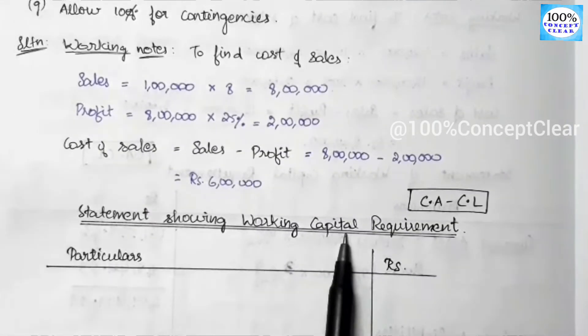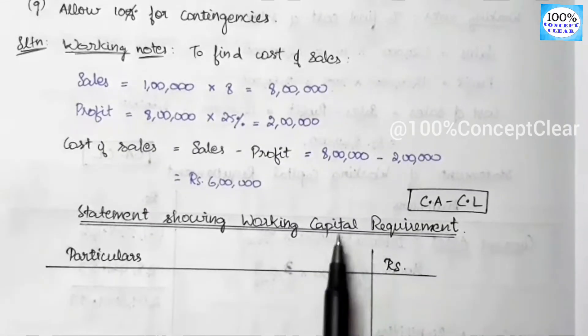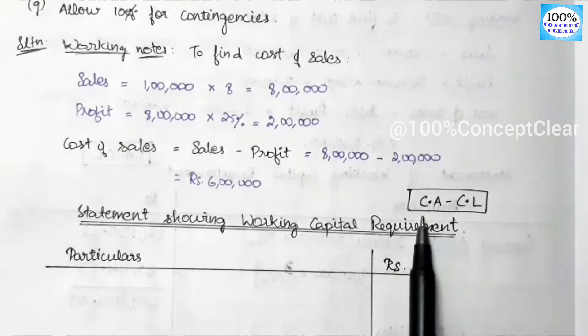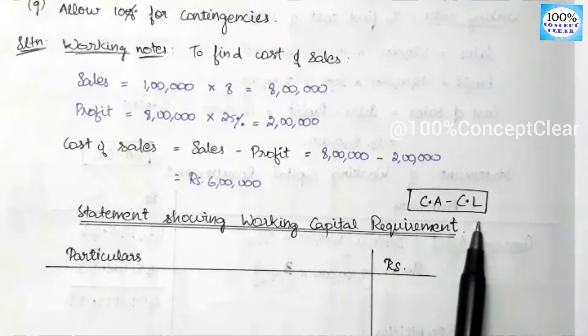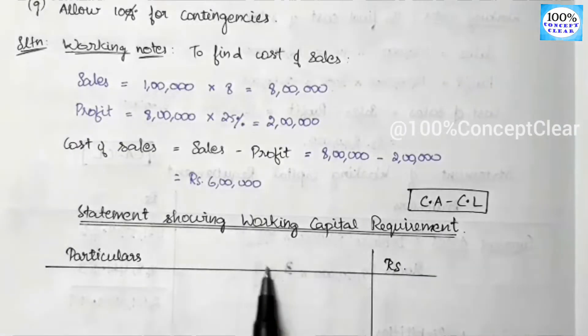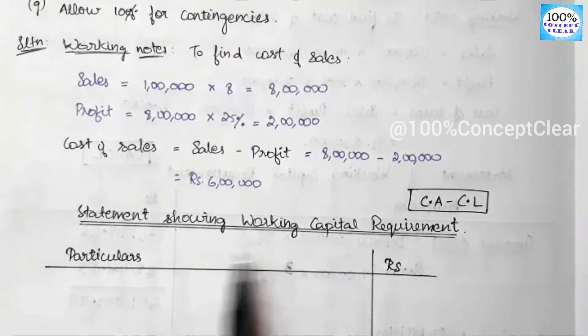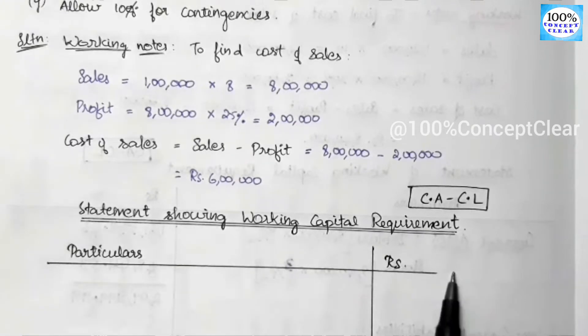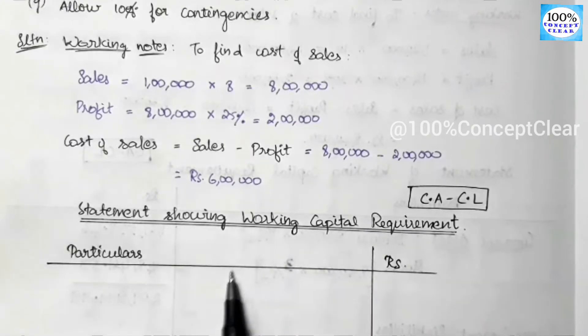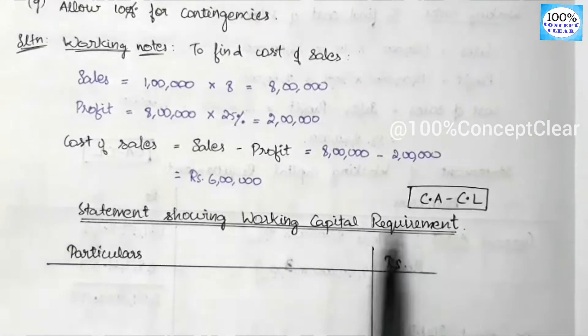Next, we have to calculate the Working Capital Requirement. The basic formula is: Current Assets minus Current Liabilities. So first we note the particulars and rupees columns, and calculate Current Assets.